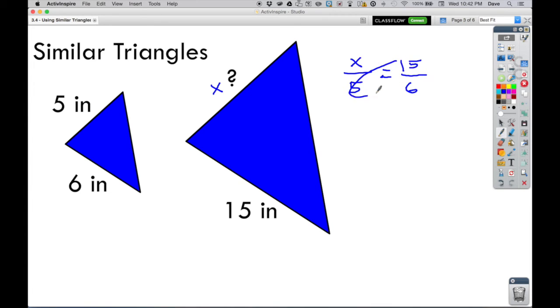Specifically with proportion equations like this, we cross multiply. So 5 times 15 is 75, and X times 6 is 6X. Divide both sides by 6—these cancel—and so X, the missing inches right here, is gonna be 12.5.